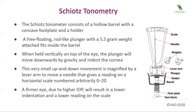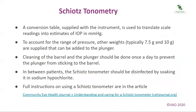The Schiotz tonometer consists of a hollow barrel with a concave footplate and a holder. A free-floating rod-like plunger with a 5.5g weight attached fits inside the barrel. When held vertically on top of the eye, the plunger moves downwards by gravity and indents the cornea. This very small up and down movement is magnified by a lever arm to move a needle that gives a reading on a horizontal scale numbered arbitrarily 0 to 20. A firmer eye, due to higher IOP, will result in a lower indentation and a lower reading on the scale.